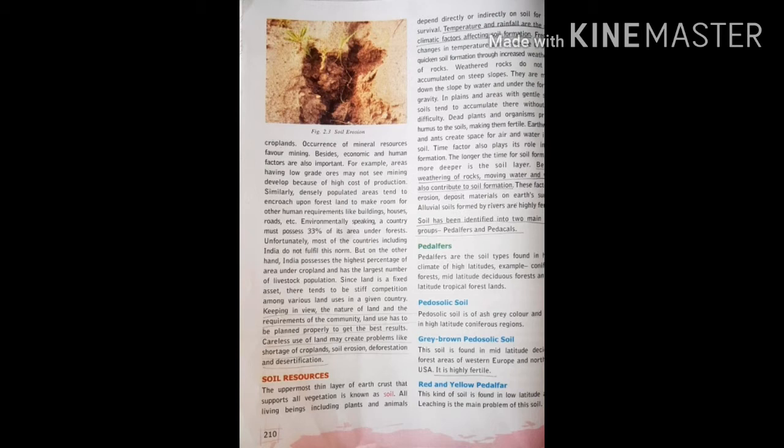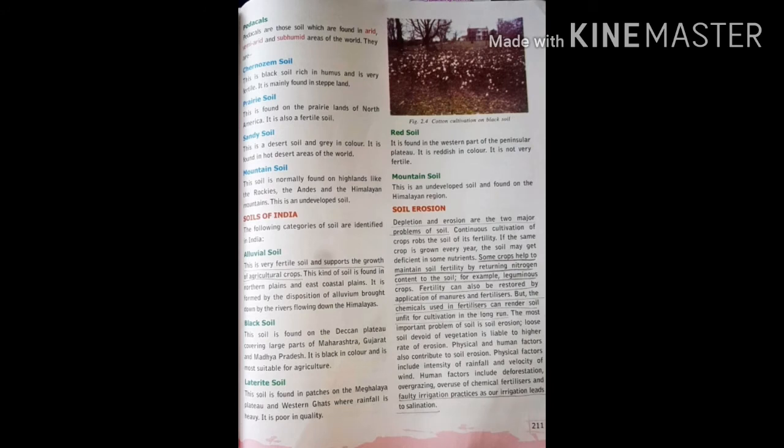Soil has been identified into two main zonal groups: pedalfers and pedocals. Pedalfers are soil types found in humid climates of high latitudes, such as coniferous forest, mid-latitude deciduous forest and low-latitude tropical forest lands. Pedocals are soils found in arid, semi-arid and sub-humid areas of the world.